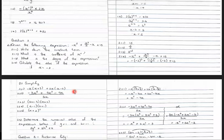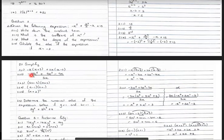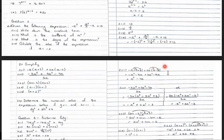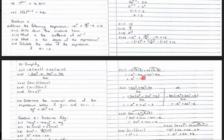Question 2.2.1: you need to simplify completely. You've got negative x times open brackets x plus 3, expanded and multiplied out. Negative x times x gives negative x squared. Negative x times 3 gives negative 3x. Then 2x times x gives 2x squared, and 2x times negative 2 gives negative 4x. Collecting like terms: negative x squared plus 2x squared gives x squared, and negative 3x minus 4x gives negative 7x.